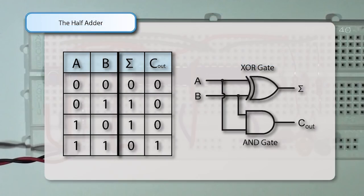We can now draw this using the diagram on the right hand side. We see we have two inputs going into our circuit, with both inputs going to the exclusive OR gate and also branching off to the AND gate. The output of the AND gate is our carry out, and the output of our exclusive OR gate is the sum of our two-input half adder.